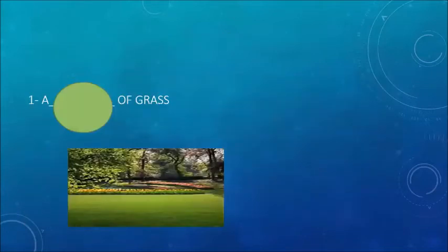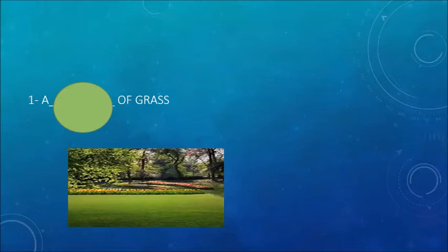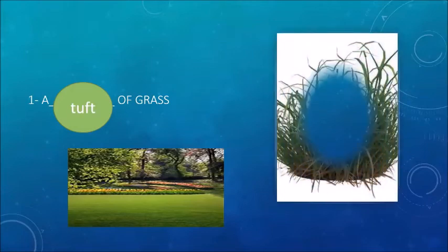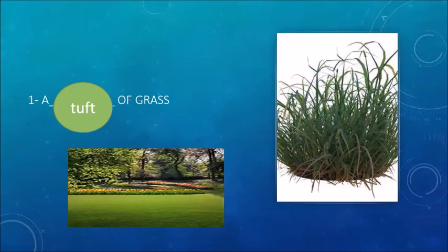The first sentence is: a ___ of grass. As you can see in this picture, grass growing in a garden is very difficult to count stalk by stalk. But if we take out a piece of soil from the garden, we can estimate the stalks of grass on that smaller chunk — it is called a tuft of grass. So a tuft of grass gives a clearer estimation compared to the whole uncountable garden.